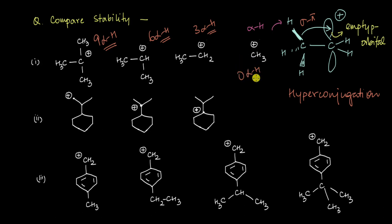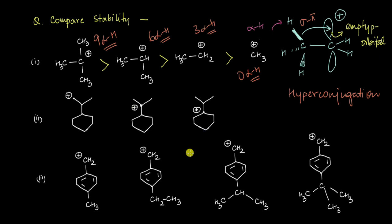Because a greater number of alpha hydrogens means greater stability, the tertiary cation is going to be more stable than the secondary, which is more stable than the primary, which is more stable than the one with no alpha hydrogens. Now let's move to the second set of cations — pause the video and try to arrange these cations in order of their increasing stability.